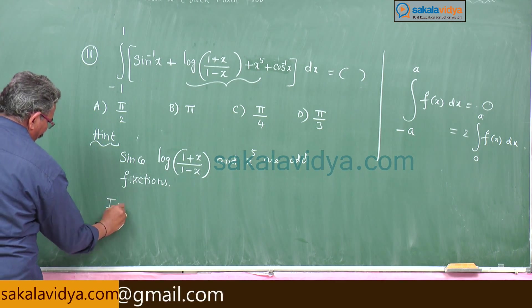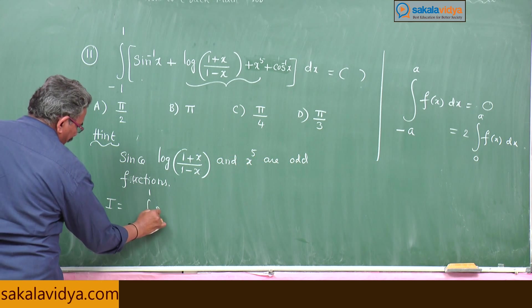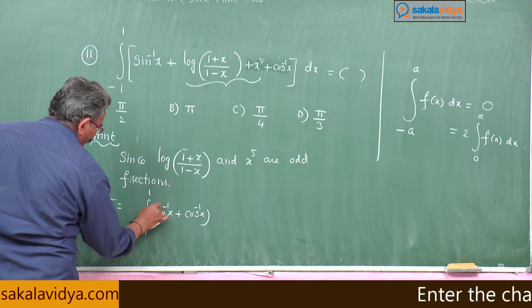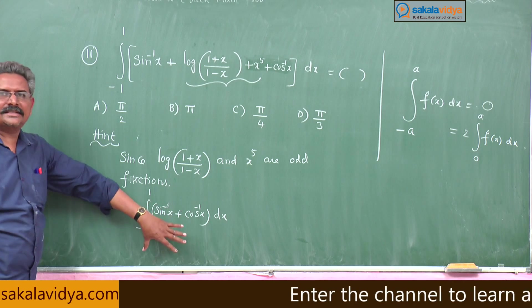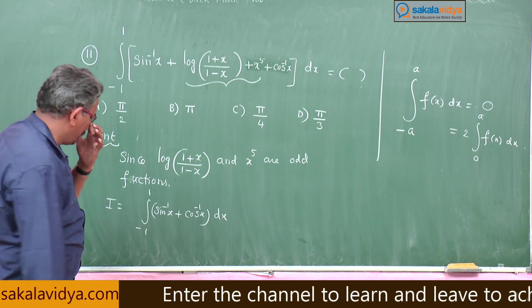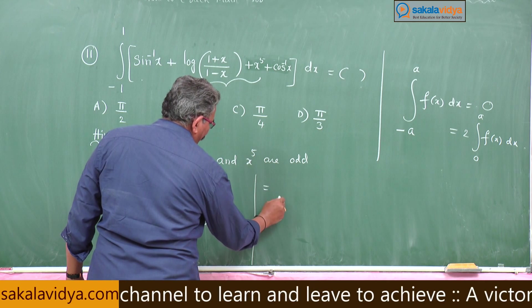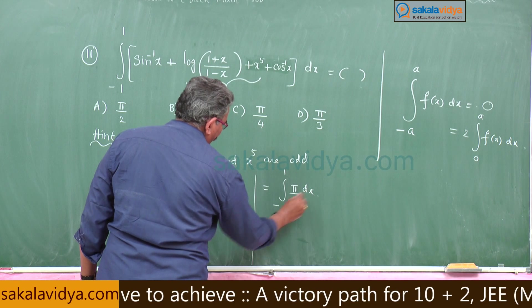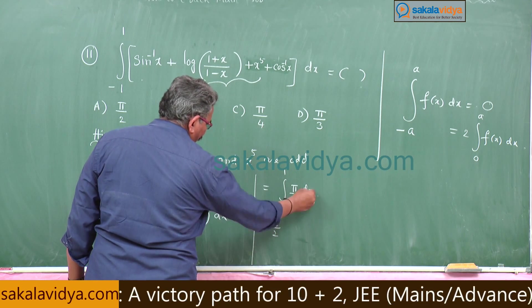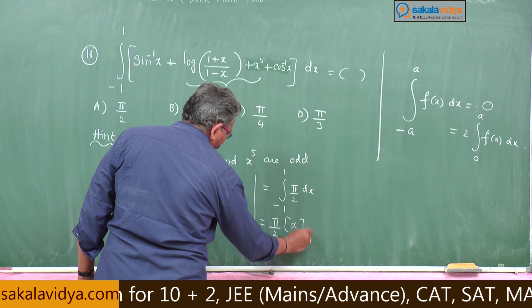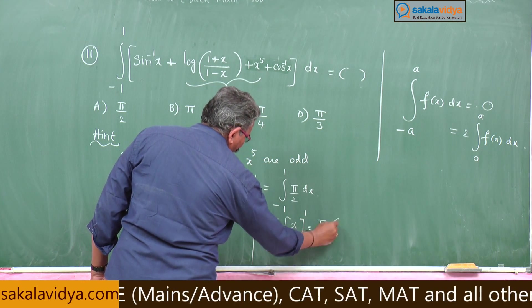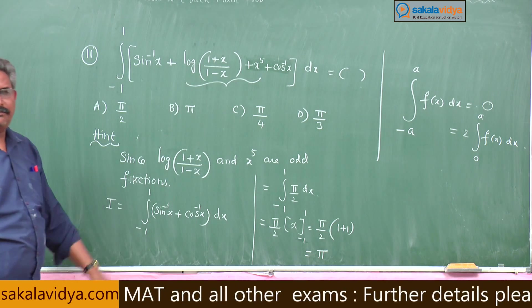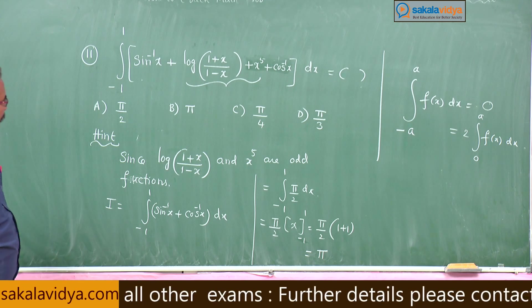Now this I becomes integral minus 1 to 1 of sin inverse x plus cos inverse x dx. Sin inverse x plus cos inverse x is nothing but a constant function that is π/2. So this is integral minus 1 to 1 of π/2 dx. π/2 into upper limit is 1 plus 1, 2 to cancel, giving π.